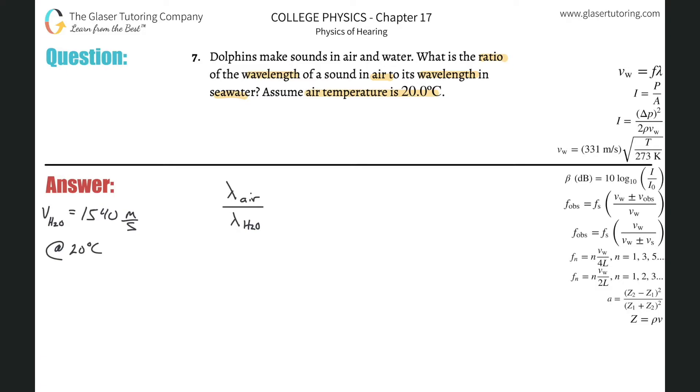So how can I expand on these wavelengths now? Well, I know they're telling me they want us to find the ratios between them. I know that I know the velocity of the sound wave in water. I also know the velocity of sound in air at 20 degrees Celsius. This is memorized. This is going to be 343 meters per second.